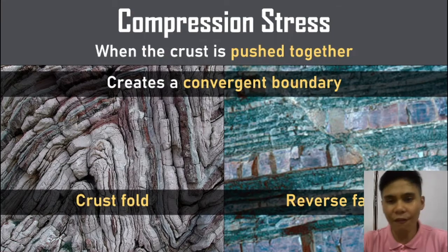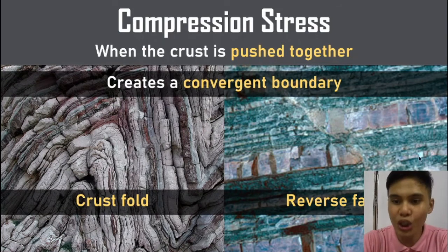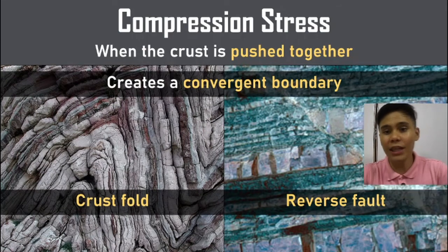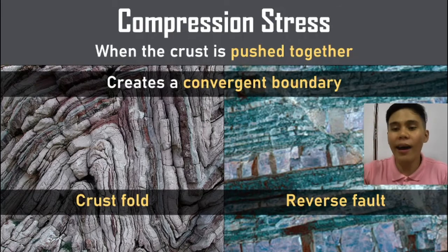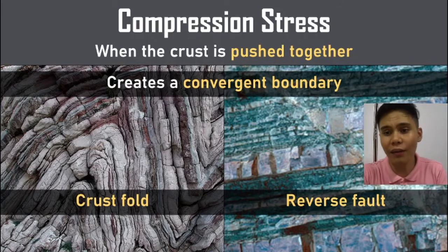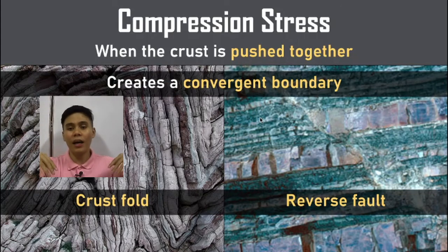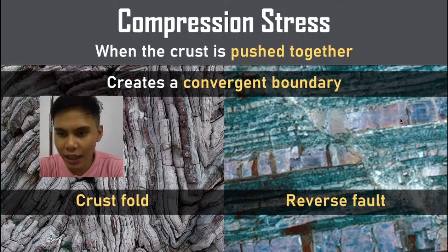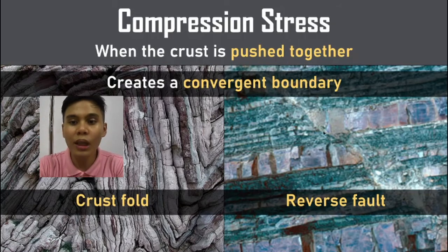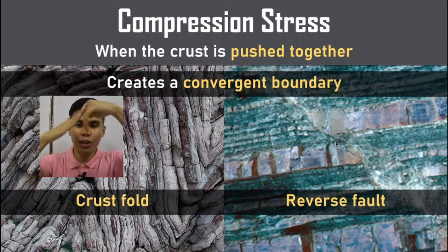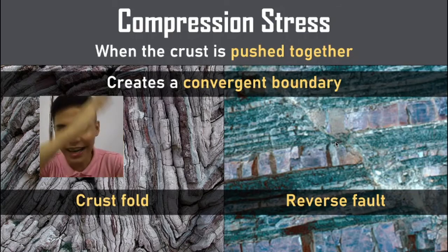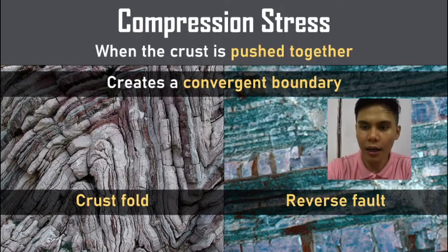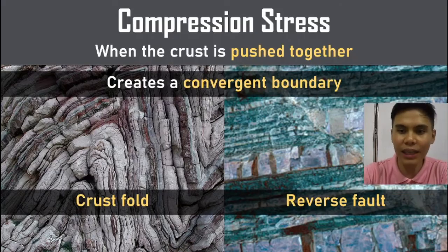There are many types of stress. The first is compression stress — it's when the crust is pushed together. Generally, in compression stress, we create a convergent boundary because it's moving together. We have structures like a crustal fold or a reverse fault. A reverse fault is when your crust is moving together; you can see that the layers are cracked and one is sliding above the other piece of land. That's compression stress.